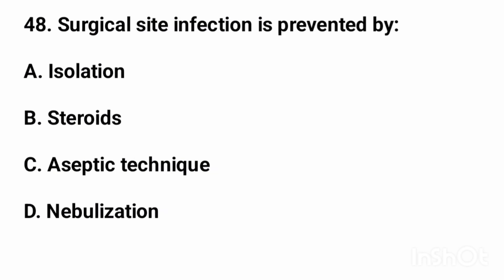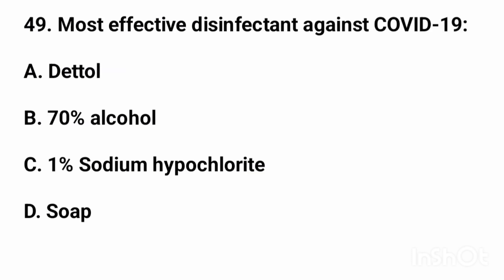Question number 48: A surgical site infection is prevented by? The right answer is option C: aseptic technique. Question number 49: Most effective disinfectant against COVID-19? The right answer is option C: 1% sodium hypochlorite.